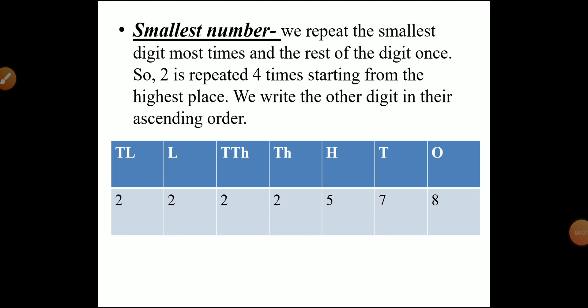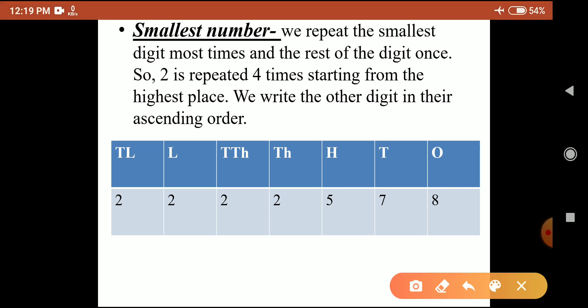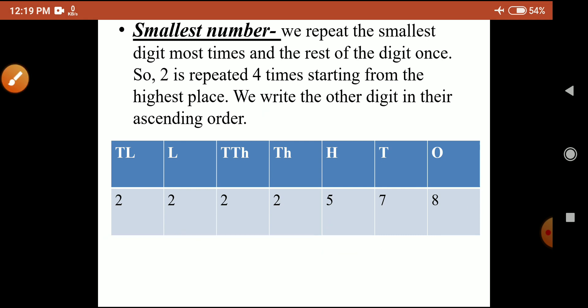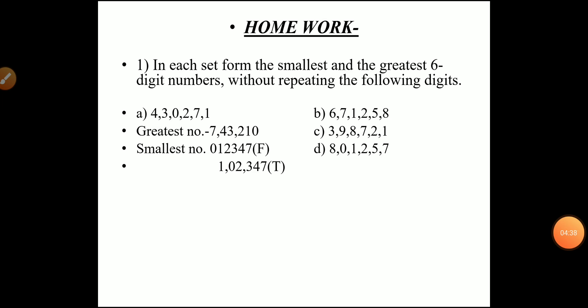For the smallest number with repetition, we repeat the smallest digit the most times and write the rest only once. In this group of digits, 2 is the smallest. So we repeat 2 four times in the place value table starting from the highest place, and the remaining digits are written in ascending order. The smallest number formed is 22,22,578 — twenty-two lakh twenty-two thousand five hundred and seventy-eight.